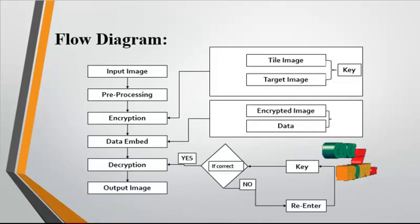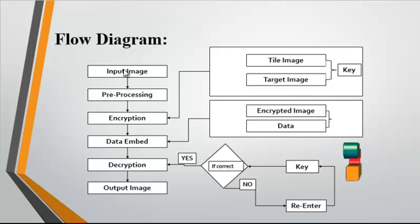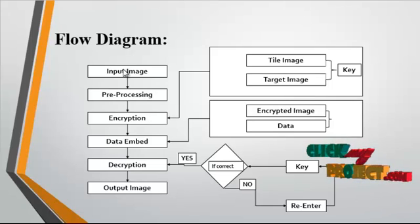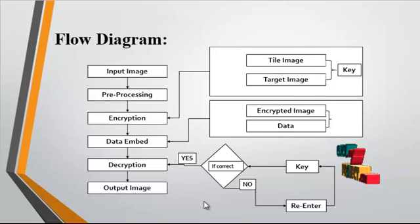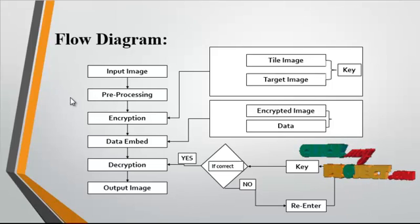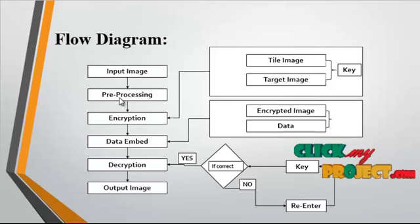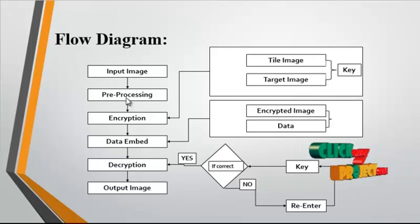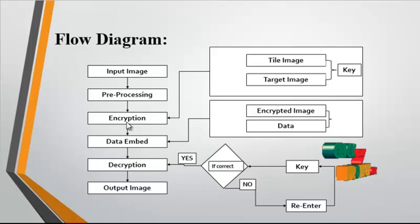Now we discuss the flow diagram. First, the input image is taken from the dataset. The input image then undergoes pre-processing, which involves removing noise from the image using a Gaussian filter.